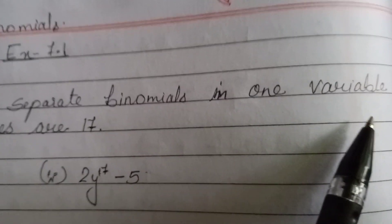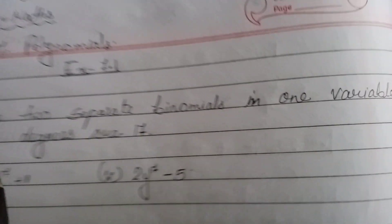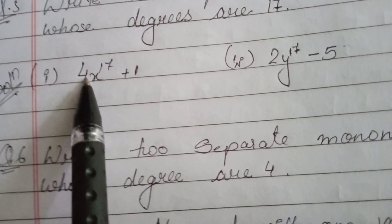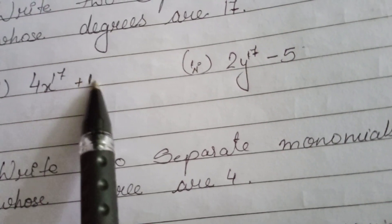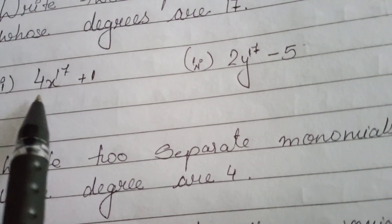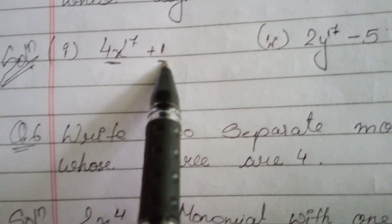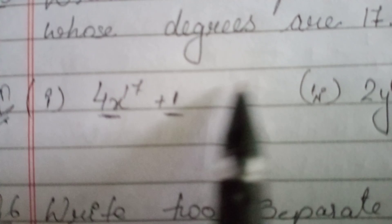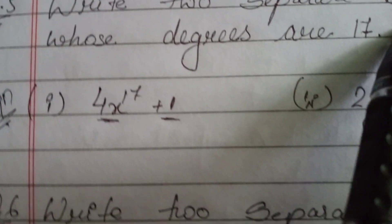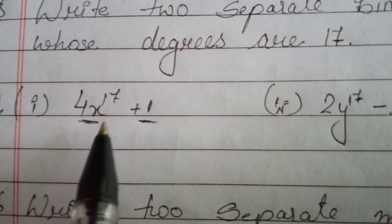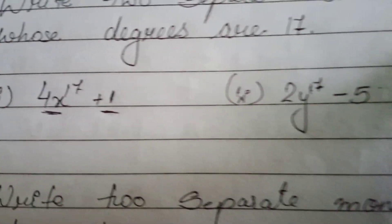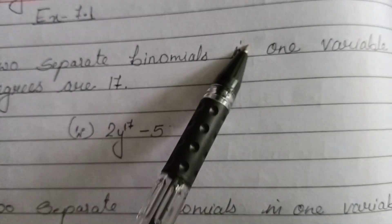Here we can see the solution. The first example is x to the power 17 plus 1, because there are two terms, making it a binomial. The degree is 17 and only x is used, satisfying the one variable condition.